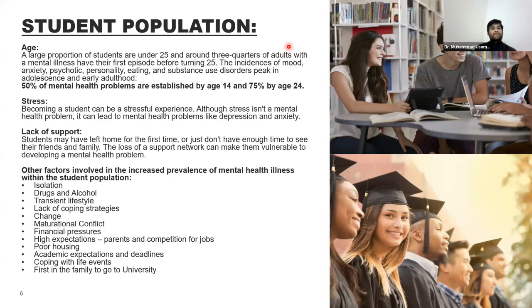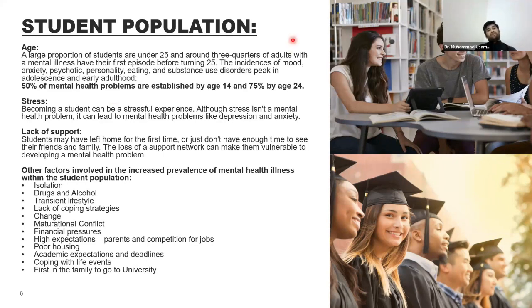The incidence of mood, anxiety, psychotic, personality, eating, and substance use disorders peaks in adolescence and early adulthood. Drug abuse is also a significant factor — teenagers may start using drugs for recreational purposes, but many drugs disrupt normal body functioning and brain hormone balance, often leading to depression or other psychological issues.